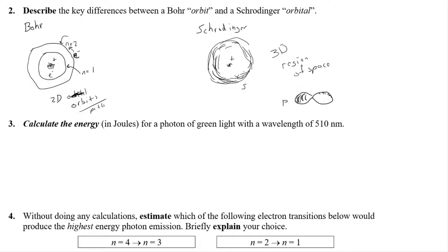We can have different shapes. The s orbital is very spherical. We also have the p orbitals with a dumbbell or peanut shape — I'll add some shading to show they're three-dimensional — pointing along x, y, and z. Then you can draw the d orbitals, which look sort of like clovers. There's a very strong contrast between the Bohr and Schrödinger models, so review your notes on that.